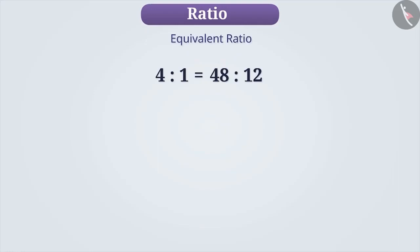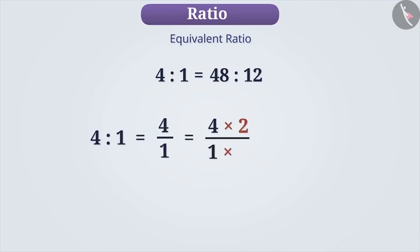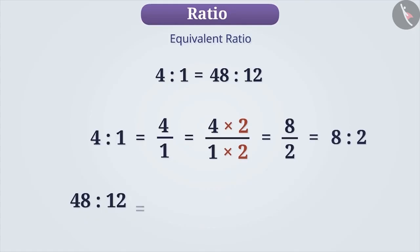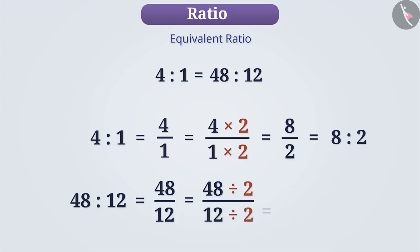For example, 4 is to 1 equals 4 by 1, which equals 8 by 2, which equals 8 is to 2. Similarly, 48 is to 12 equals 48 by 12, which equals 24 by 6, which equals 24 is to 6.